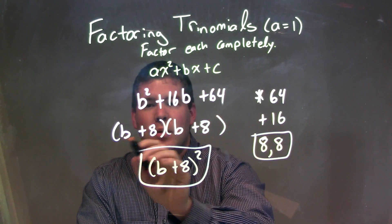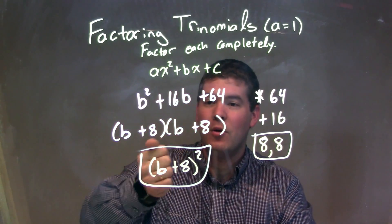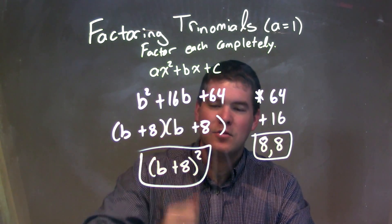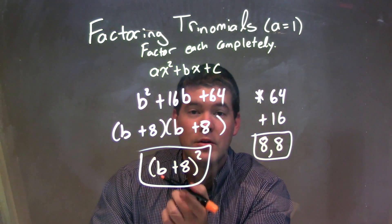Our factored form is b plus 8 times b plus 8. But since it's the same thing multiplied twice, we can write this as one thing squared. So again, our final answer here is just b plus 8 all squared.